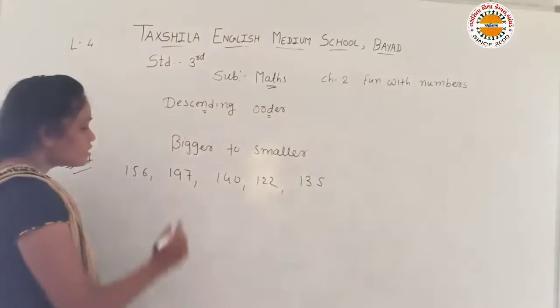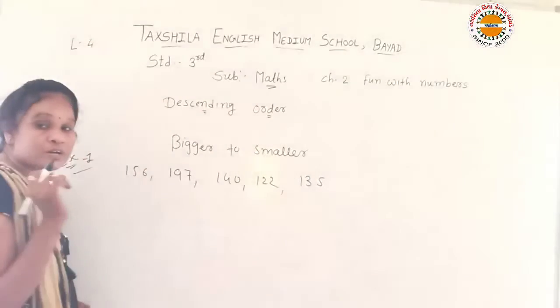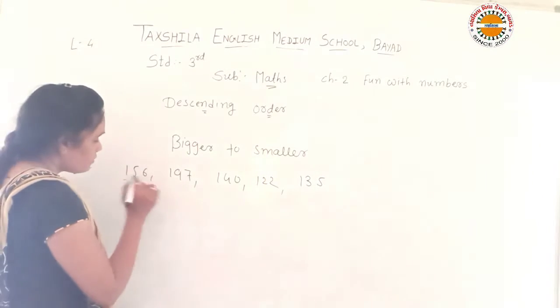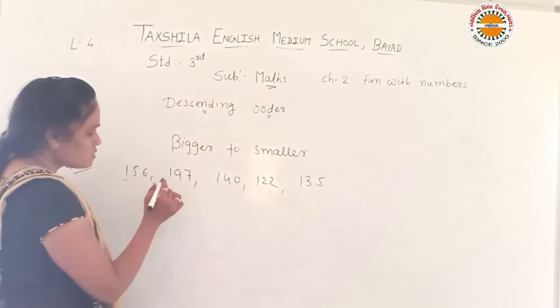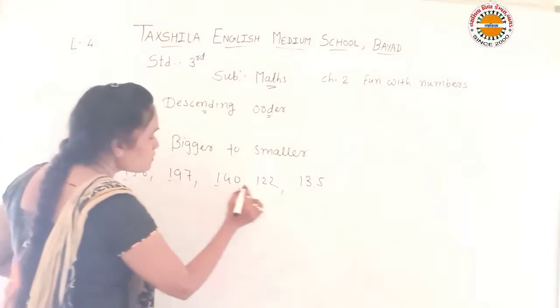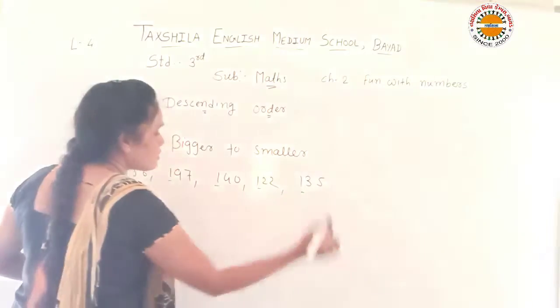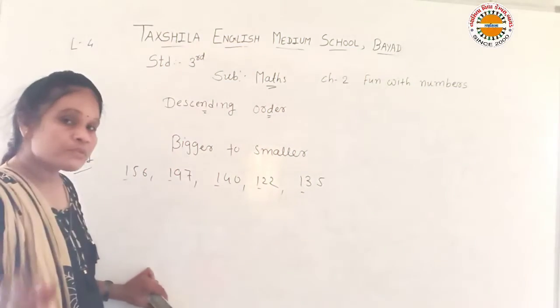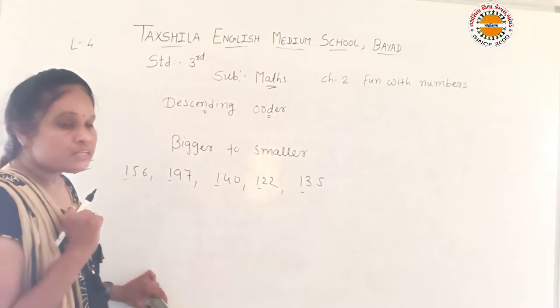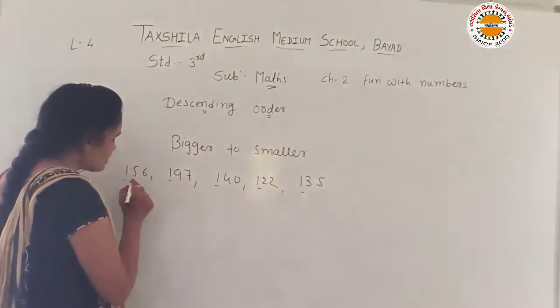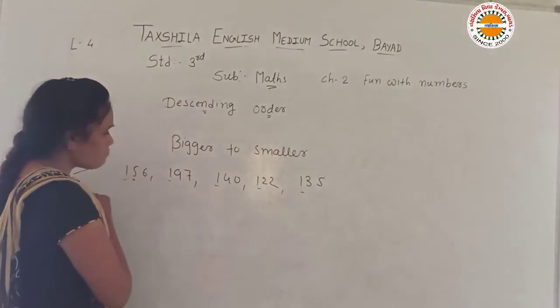Which number is this? 135. Now, either we will see — we call them the hundreds place. What is at the hundreds place? All numbers have the same point there. So we will look at the tens place. Which number is at the tens place?